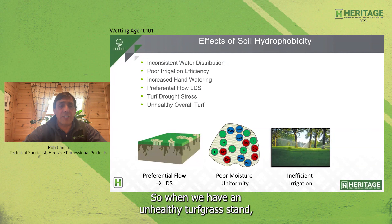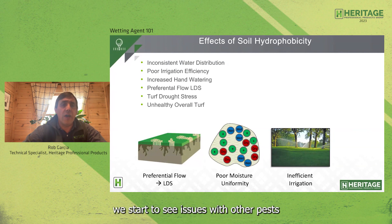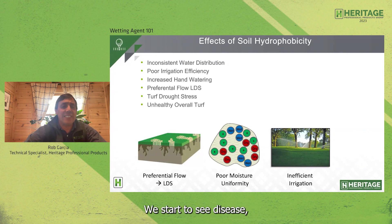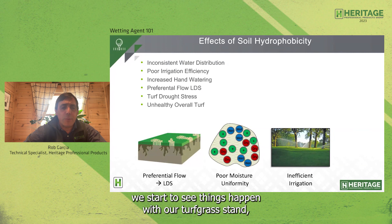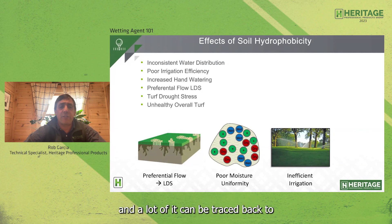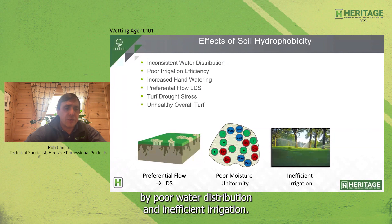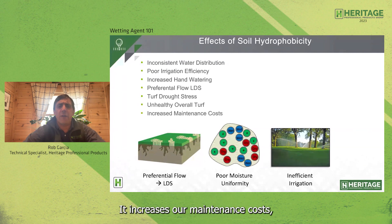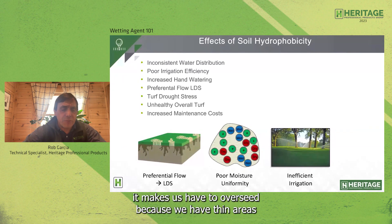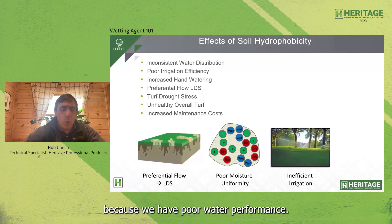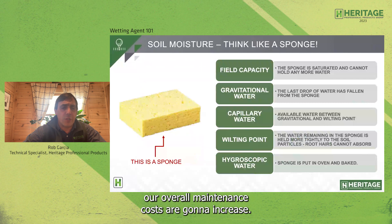When we have an unhealthy turf grass stand, we start to see issues with other pests and stresses — insect damage, disease, and other problems that can be traced back to drought stress caused by poor water distribution and inefficient irrigation. Ultimately, this increases our maintenance costs: it increases hand watering, and we have to overseed because we have thin areas due to poor water performance, so overall maintenance costs go up.